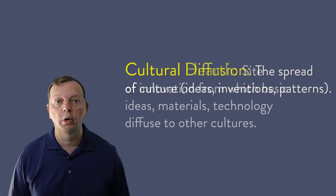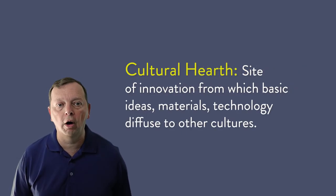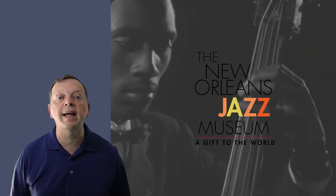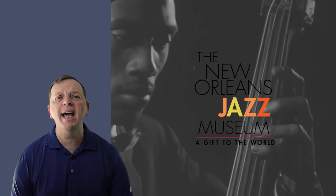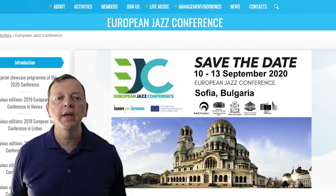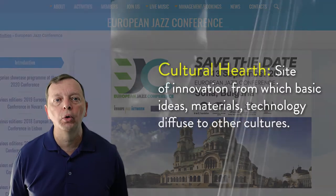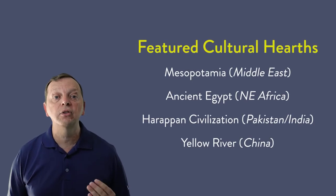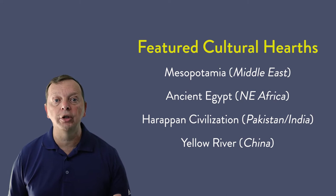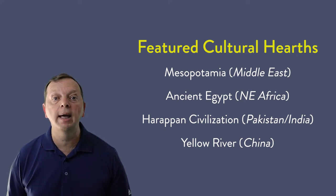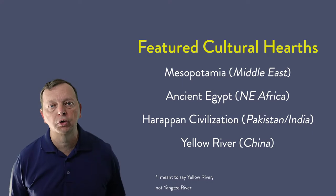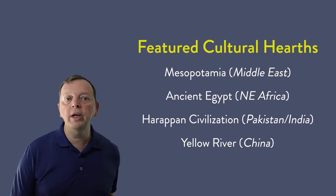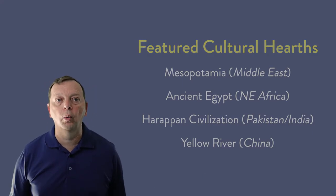The place from which a culture originates and moves from is called a cultural hearth. For example, jazz is a type of music that originated in New Orleans, Louisiana, in 1895. Today, jazz is celebrated around the world. In this case, New Orleans is the cultural hearth of jazz. Now, there are many different cultural hearths, and we'll be focusing on four in this course. They are the ancient river civilizations such as Mesopotamia, ancient Egypt, and the Harappan and Yangtze river civilizations. Each have been cultural hearths not only to their regions of Europe, Asia, and Africa, but to the entire world.